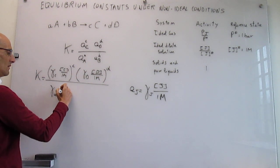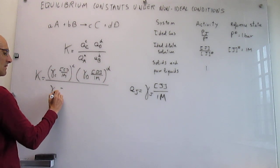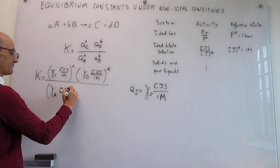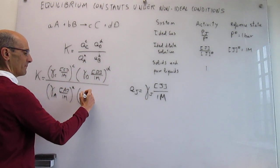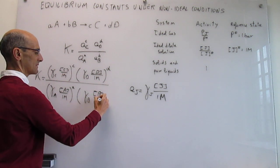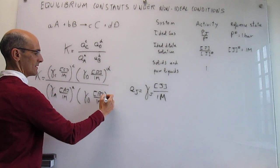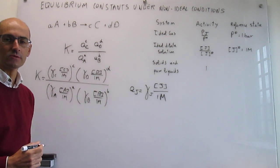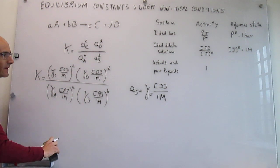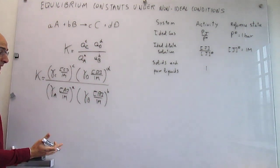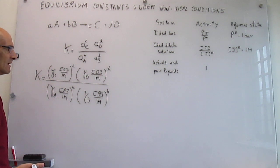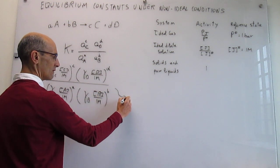The full non-ideal equilibrium constant expression then looks like: γ_C times the concentration of C over one molar, raised to the power of c; times γ_D times the concentration of D over the reference concentration, raised to the power of d; divided by the activity coefficient of A times its concentration over one molar, and the same for B. These activity coefficients γ are equal to one under ideal solution conditions, but differ from one under non-ideal conditions.